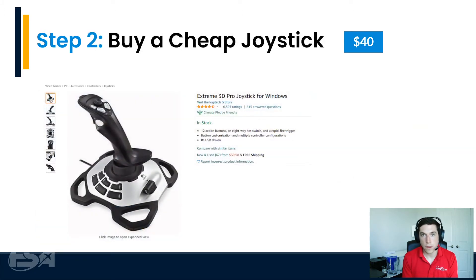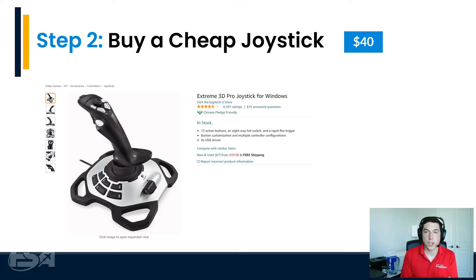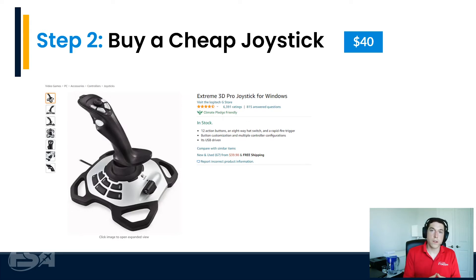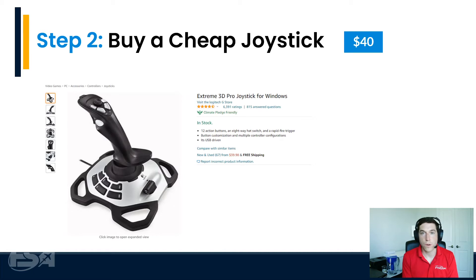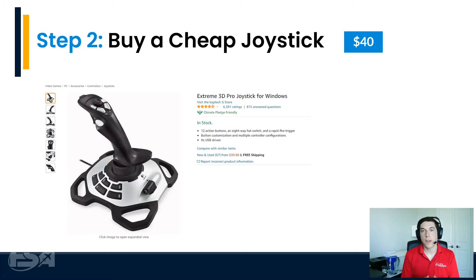Next step: buy a cheap joystick. We talk a lot about hardware and there are amazing options out there, but what you buy now is not what you'll use for your entire flight simming career. This is just a really good place to start. Go to your local electronics store or Amazon and buy a cheap joystick for $30 or $40. You can control the airplane with a mouse and keyboard or a gaming console controller, but those are not the same — get a joystick. Trust me, it'll be worth it.